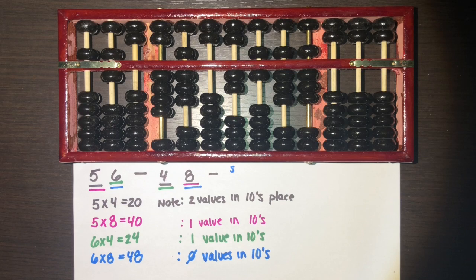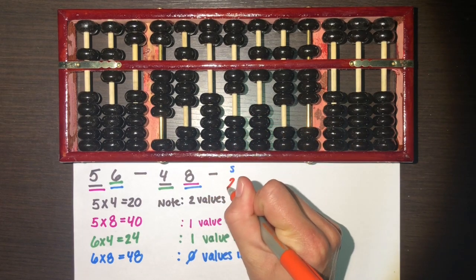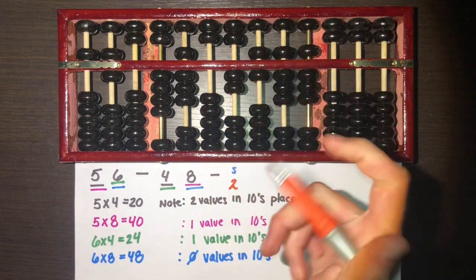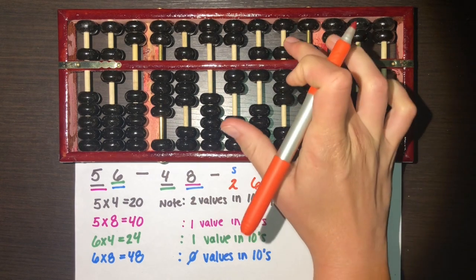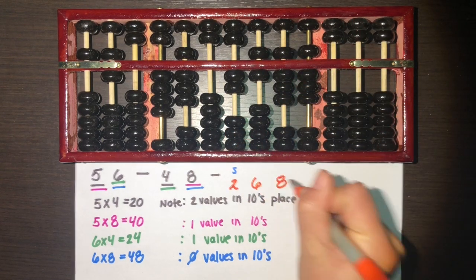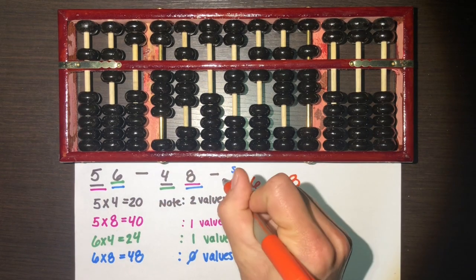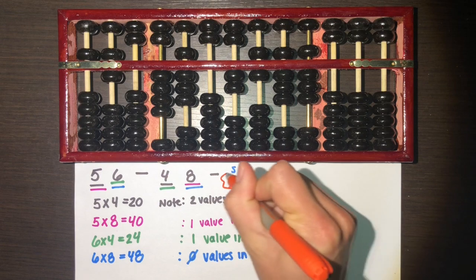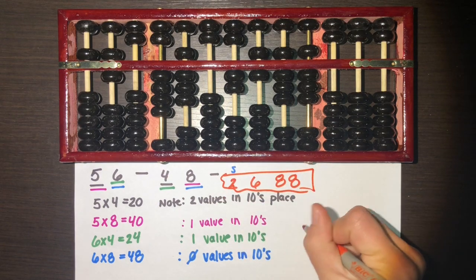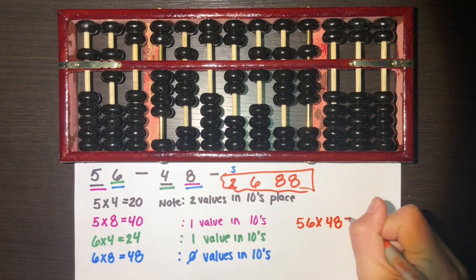We are almost done with this multiplication — now we just need to read our abacus. Starting from our reference position, we read two, then five-six, five, six, seven, eight. This final number is our answer: 56 times 48 equals 2,688.